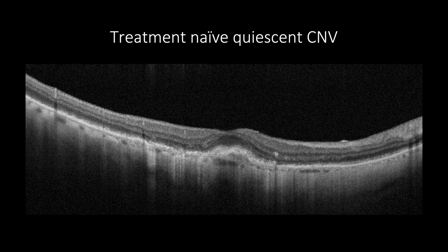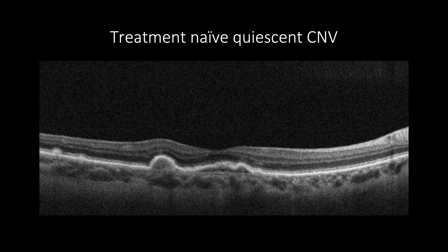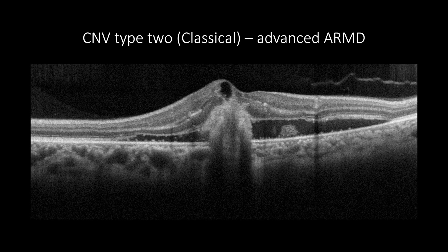Treatment-naive quiescent CNV features a fibrovascular PED that has its major axis in the horizontal plane with visible Bruch's membrane, without the presence of subretinal or intraretinal fluids or an increase in retinal thickening. However, treatment-naive quiescent CNV can be combined with geographic atrophy or intermediate drusen.